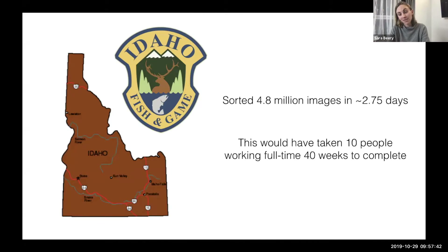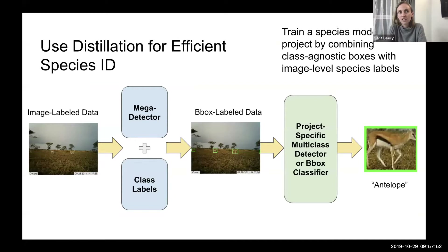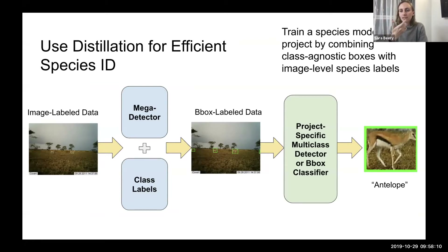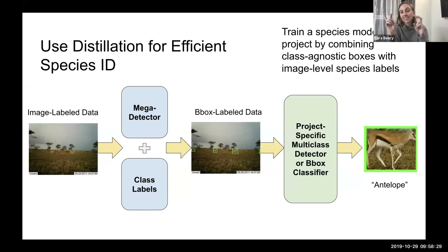Obviously we're all here for species identification, which would really be great, but that is a lot more complicated. As a camera trapper, you really only care about doing well on the species that show up in your projects. Having one classification model to rule them all is maybe not the right paradigm, because you don't want to be trying to classify species from Australia if you're actually working in the US. But if you have images labeled from previous projects in the region you care about, you can use something called distillation: take your image-label data, run the MegaDetector over it to get bounding boxes, then pair those boxes to your class labels at the image level. You'll have to pull out images with multiple species, but it'll learn to detect those species separately.